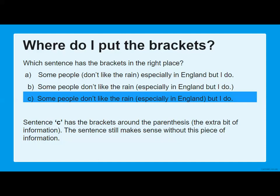If we do have bracketed information at the end of a sentence, the full stop needs to go outside of the brackets. Because of those two mistakes in B, it is C which is the correct answer: 'Some people don't like the rain (especially in England) but I do.' Taking out the bracketed information, we can see the sentence still makes sense: 'Some people don't like the rain, but I do.' That is a correct piece of writing.